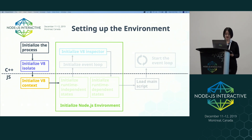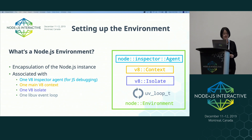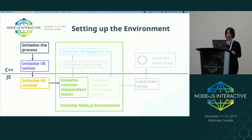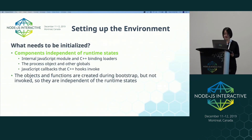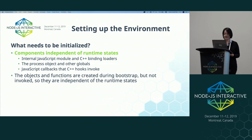After the Node context is initialized, we move on to initialize the entire Node environment. A Node environment encapsulates a Node instance — it is associated with one V8 inspector agent, one main V8 context, one V8 isolate, and one libuv event loop. To initialize the environment, we first initialize the components that are independent of runtime states. This includes the internal JavaScript module and C++ binding loaders, the process object and other globals, and JavaScript callbacks that C++ hooks invoke, which will be in charge of invoking user-provided callbacks later.